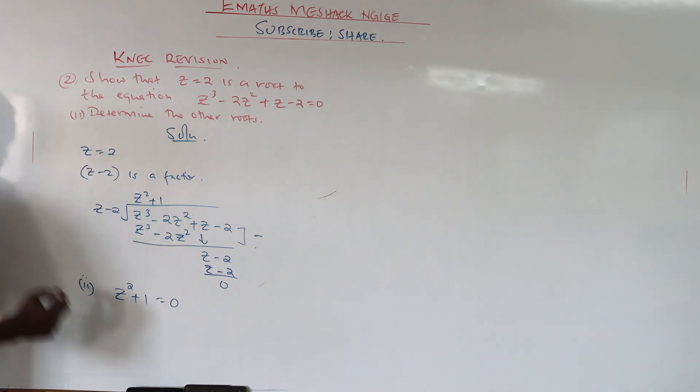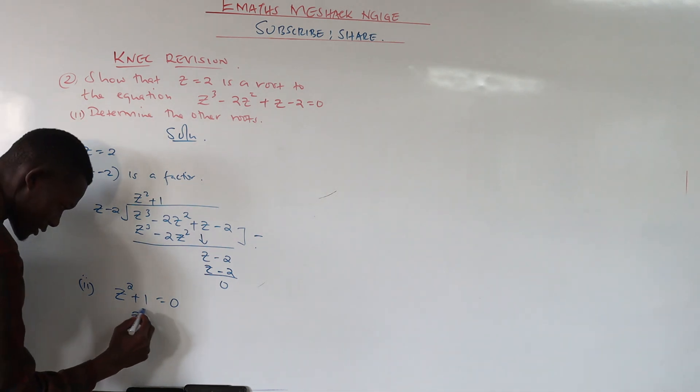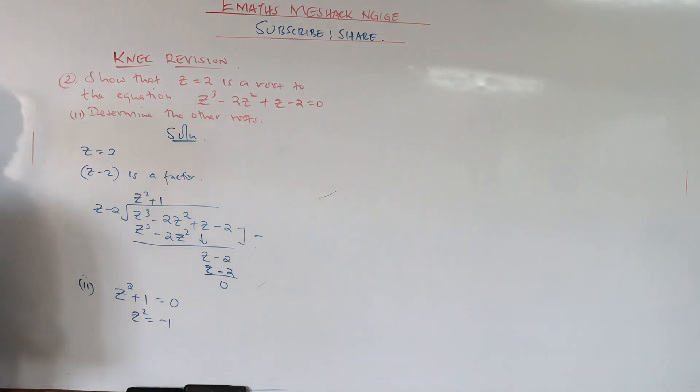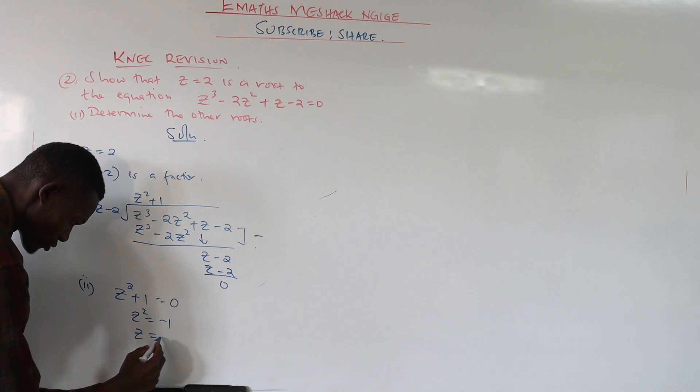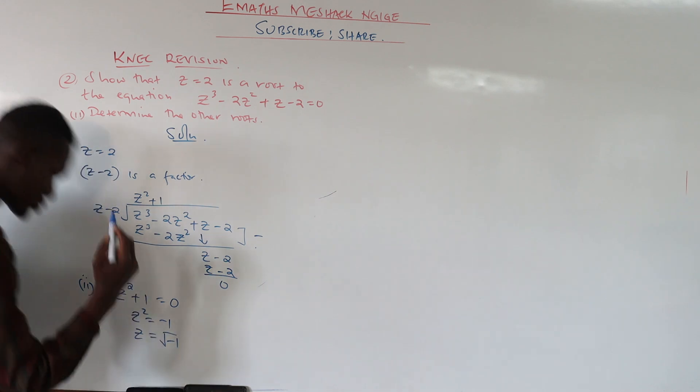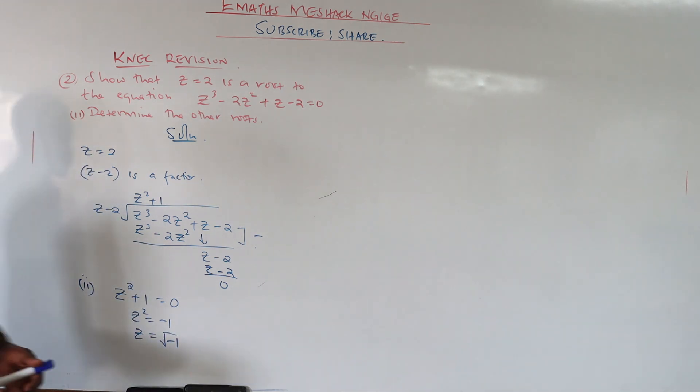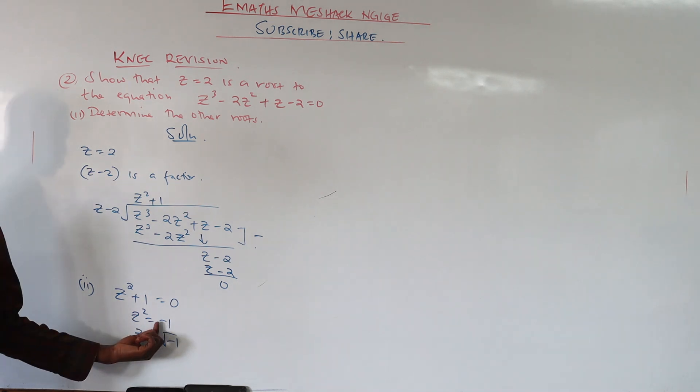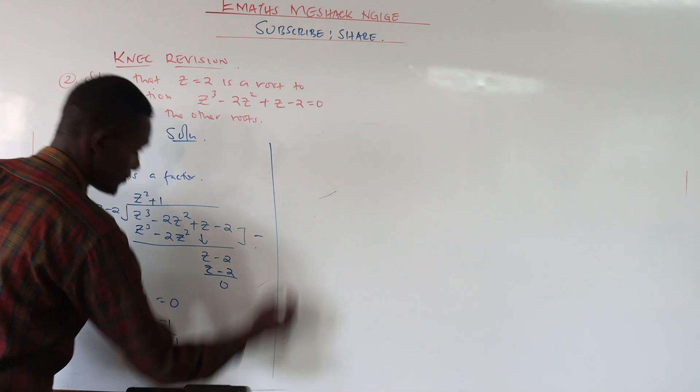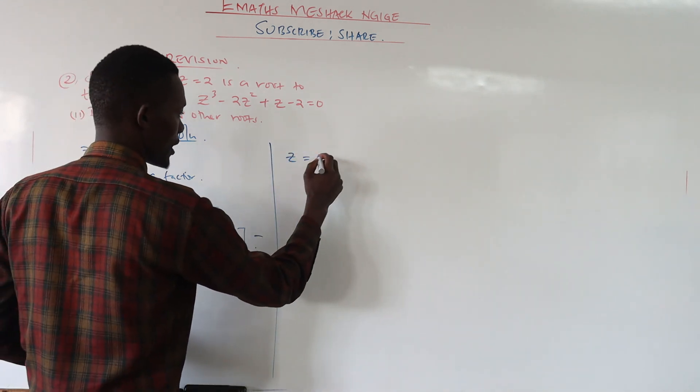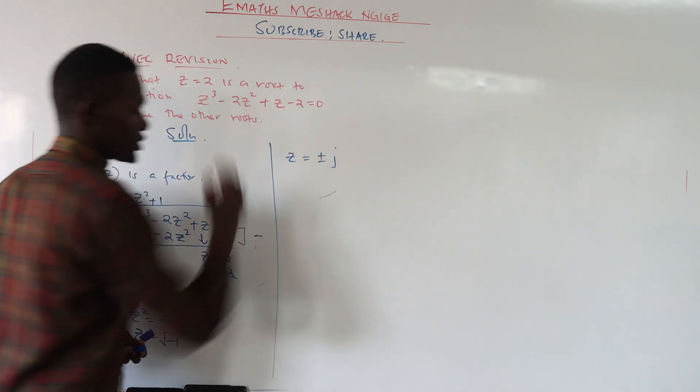Solving for this we have z squared equals negative 1. To get z we get the root on both sides. The root of negative 1. What is the root of negative 1? It's given by j. Therefore we can say z is given by plus or minus j.